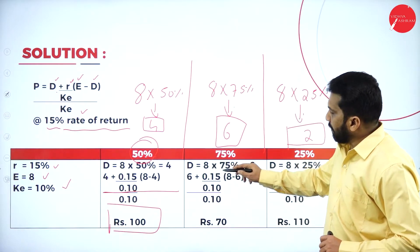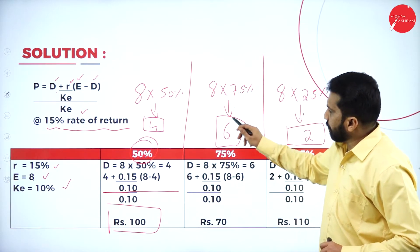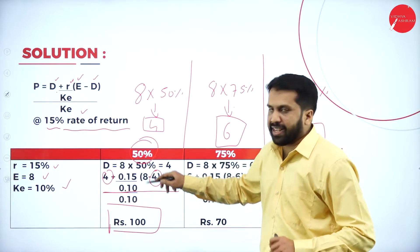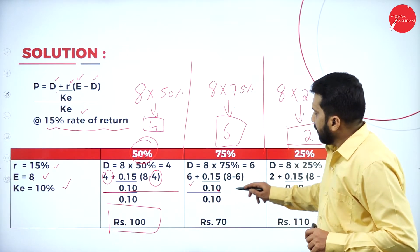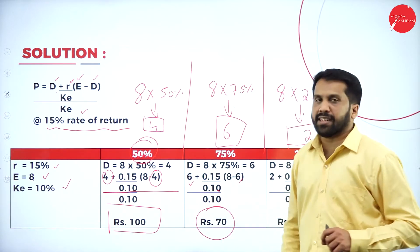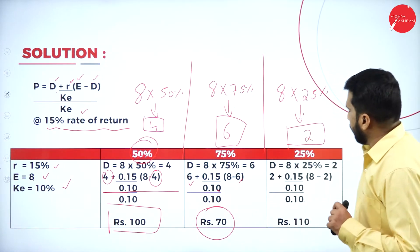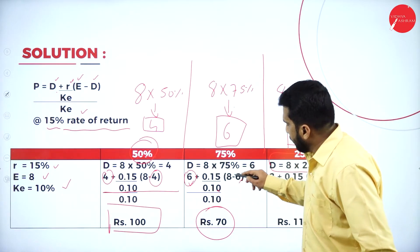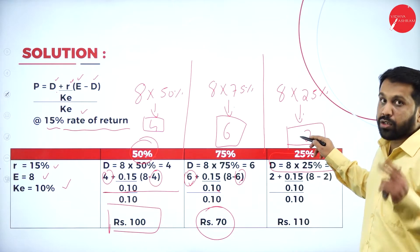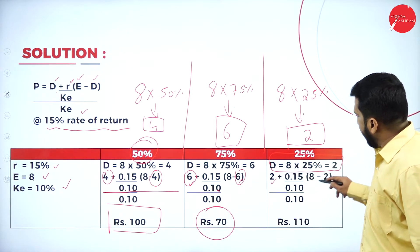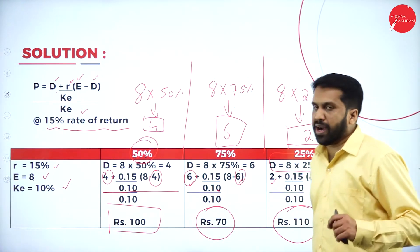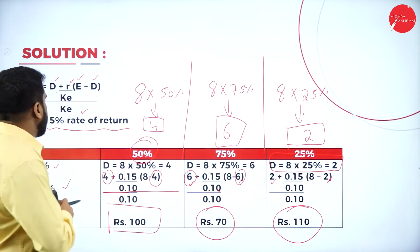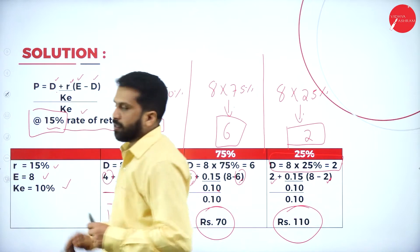Similarly, apply the same formula but take dividend as 6 rupees (75% payout: 8 × 75% = 6). Your final answer will be 70. For the last one — 25% payout: 8 × 25% = 2 rupees. With 2 and 2, your final answer is 110. This is all about your calculation of 15% return.